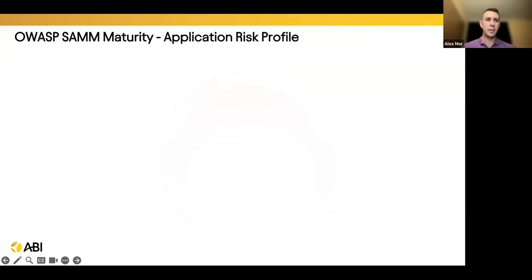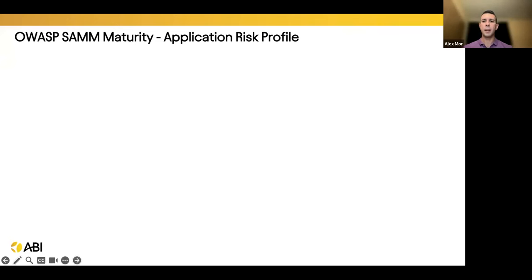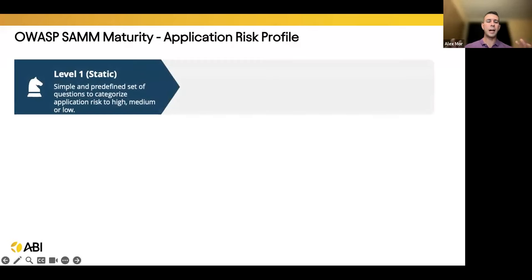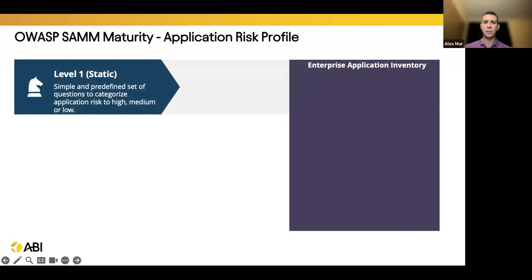As application security directors, managers, or engineers, the CISO will sometimes come to you and ask: give me the top 10 risky applications in the business. To answer that, I first go to the compliance team, risk management team, and other teams to ask: do you already have an inventory I can tap into? I introduce small changes — what I call static changes — that allow me to prioritize applications on a basic level. For example: is it internet-facing? Did we have a privacy impact assessment? Is it under certain regulation? Is it processing financial data, credit cards?